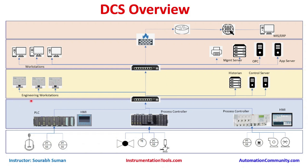The purpose of the engineering workstation is to configure the system. We also have historians, whose purpose is to save analog process data, digital process data, or whatever we configure. A historian is a large server with good storage capacity, or it can be software that saves data to a NAS or SAN drive on the network, depending on the type of DCS.